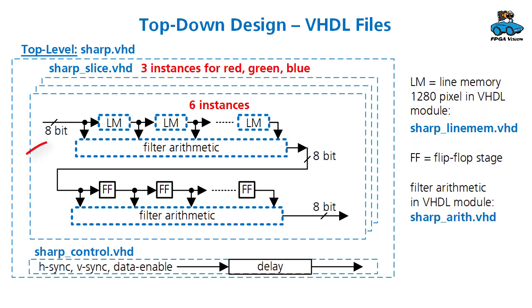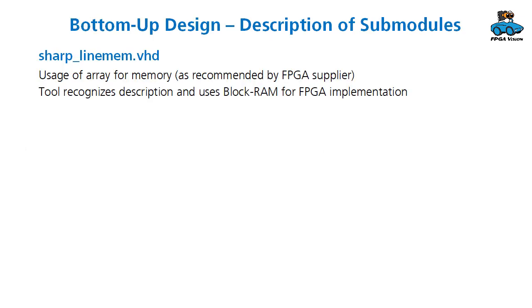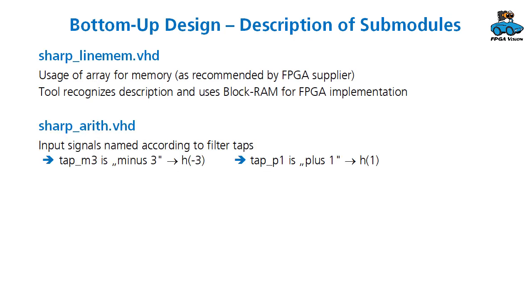Input signal, intermediate signal and output signal are 8-bit because that is the resolution from the Octave simulation of the algorithm. For the bottom-up design and description of submodules, for the line memory we use an array as recommended by the FPGA supplier, and the synthesis tool will recognize this description and use block RAMs for our FPGA. For the filter arithmetic there is a naming convention for the input signals: M3 means the filter tap minus 3, P1 means plus 1, and so on.